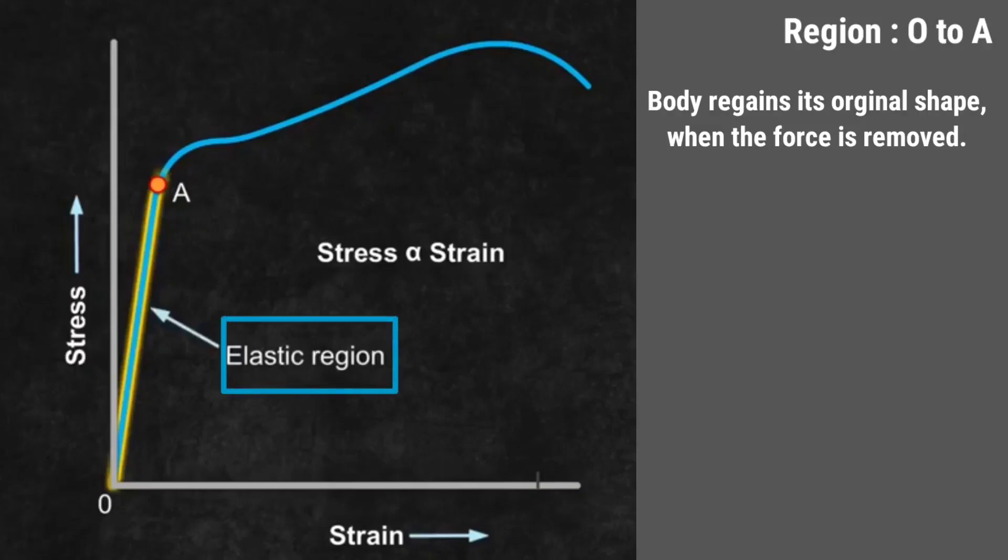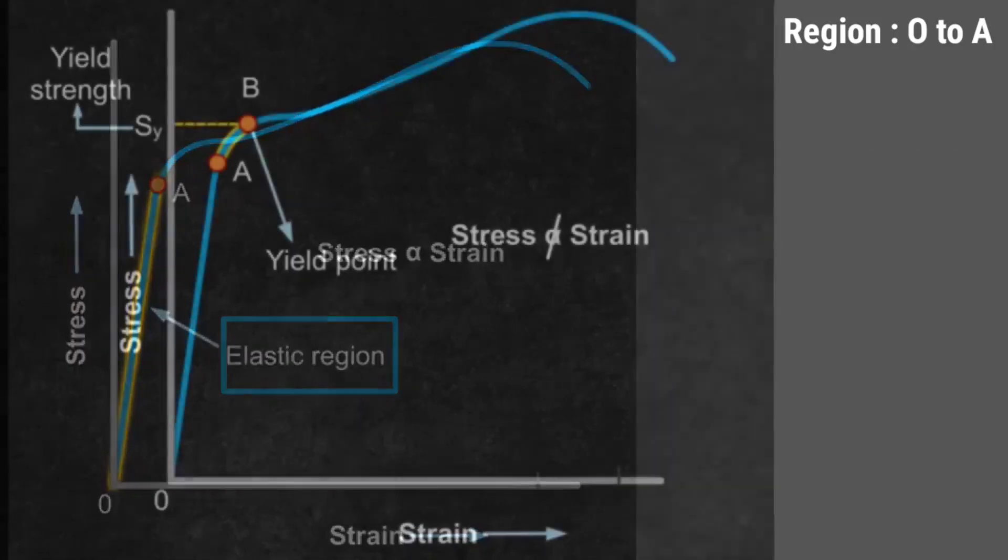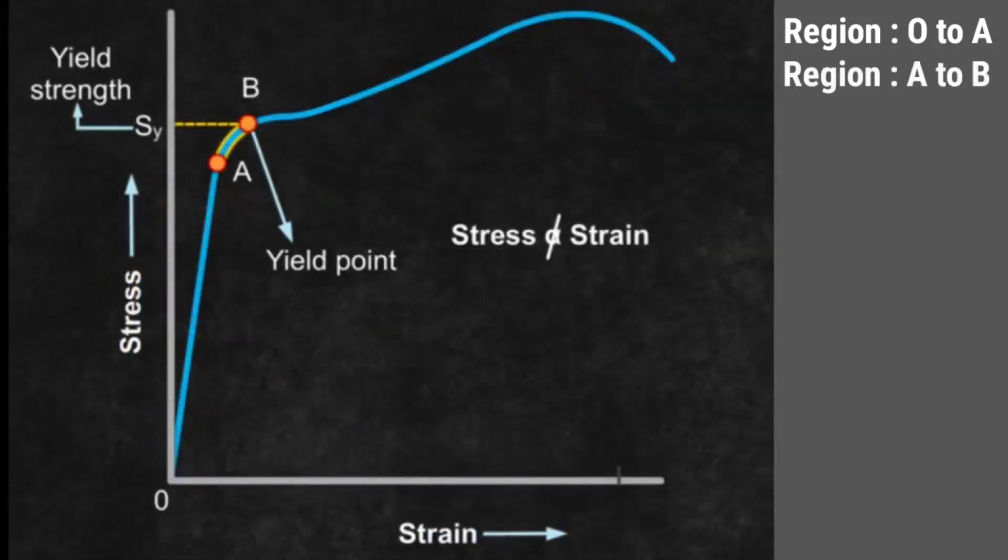If you further increase the force, the stress also increases. In the region from A to B, the stress and strain are not linearly proportional. In spite of that, the body returns to its original dimensions when the load or force is removed. Point B in the curve is known as yield point or elastic limit, and the corresponding stress is known as yield strength, SY of the material.